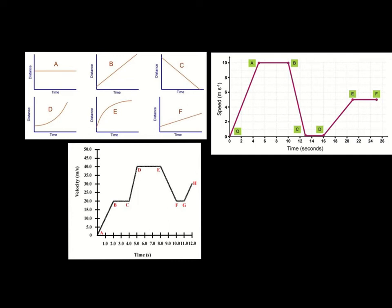Now don't be fazed by these graphs. Once you've done various equations to do with velocity and speed, you can plot the information on a graph and these can be quite useful in telling us about the motion of an object. What's really important is to always check the axes. We've got distance and time graphs here, and in the exam you might be given a distance-time graph to analyse. Distance is on the y-axis and time is on the x-axis.